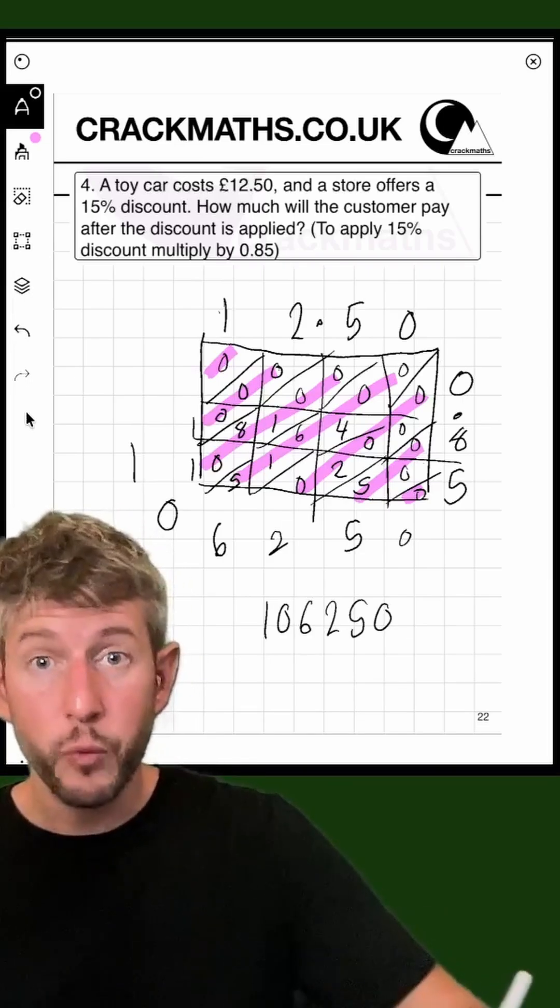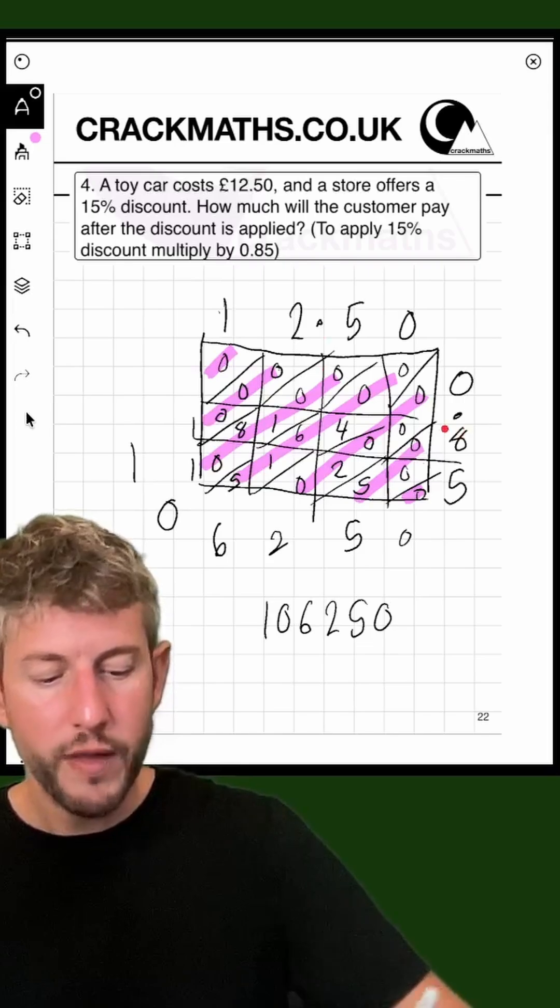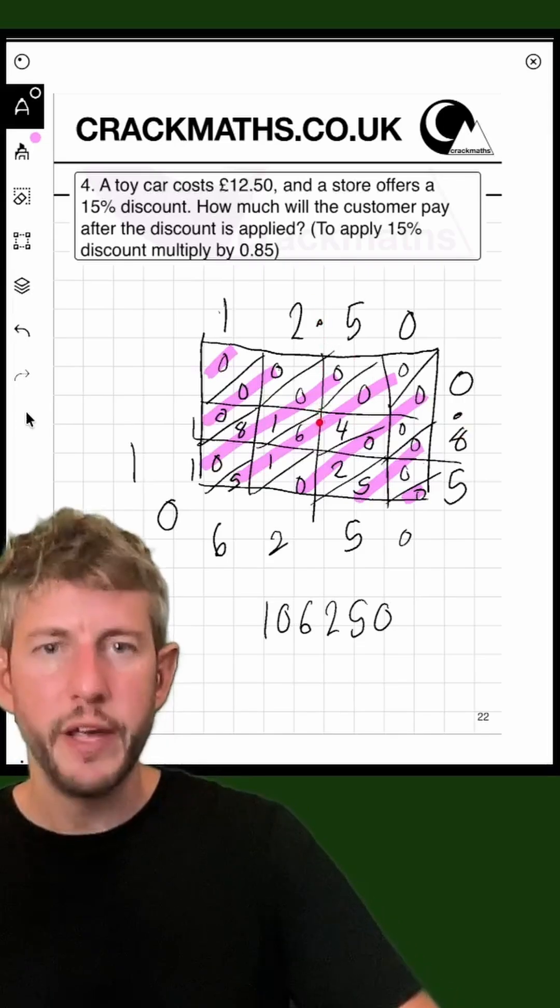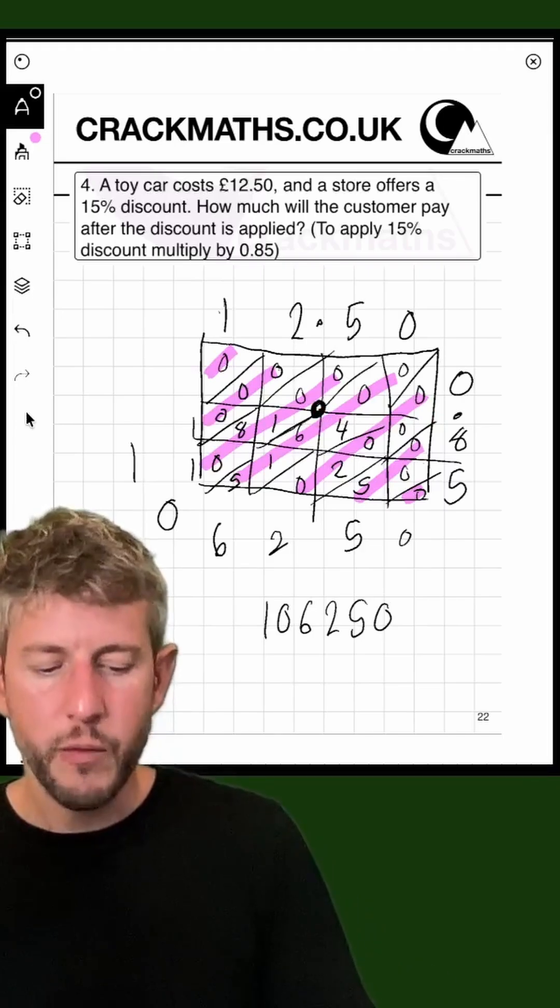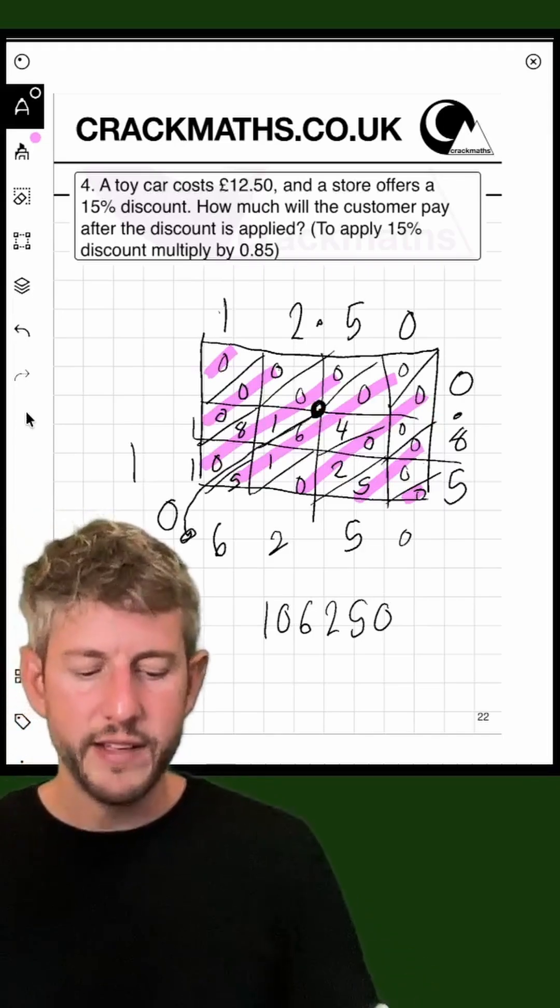Well, with the grid method, what happens is we can follow to where the decimal points meet. So we see if this one travels down here and this one travels across here, the decimal points are going to meet here. So if we follow this line down here, we end up here.